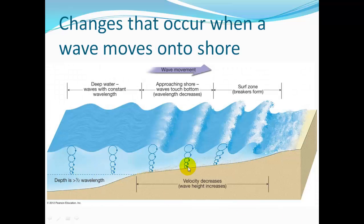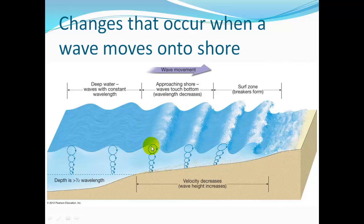As the wave moves onshore, there's no energy below half the wavelength. But once the depth of the water is less than one half of the wavelength, the waves start touching bottom and the wave shape begins pitching forward, until the waves actually break at the shore.